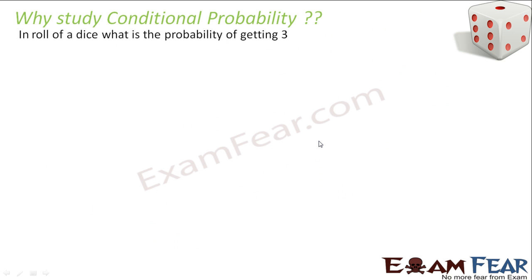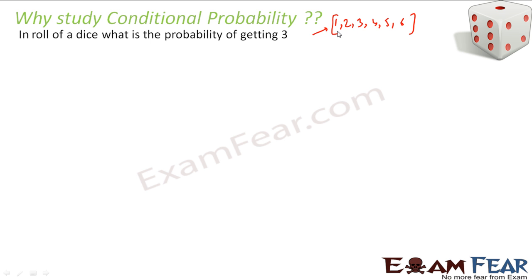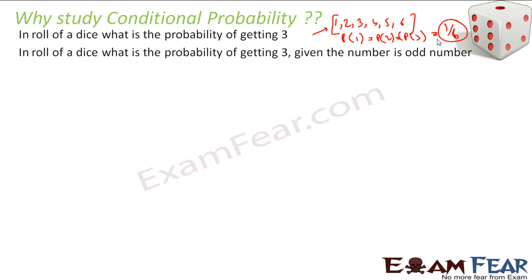Let's take one more example. In a throw of a die, what is the probability of getting 3? You throw a die and may get 1, 2, 3, 4, 5, or 6 — six possible outcomes, all equally probable. So the probability of getting any number is 1 by 6. Now there is a tweak: what is the probability of getting 3 given that the number is an odd number?